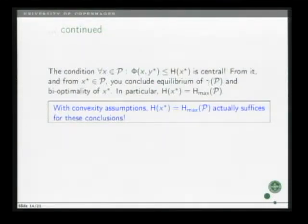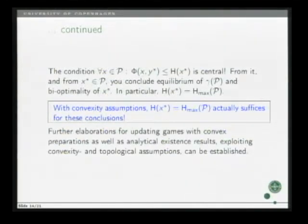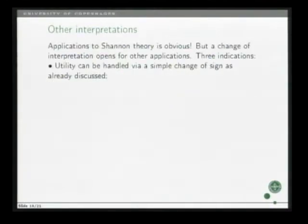Now, where does convexity make a change? Well, a difference, I should say. Well, the Nash equilibrium condition, we have seen is very central. If it holds, then in particular, then you have all these nice things. In particular, you have that the entropy of x star is the maximum entropy. But under convexity, this condition suffices for all these conclusions about equilibrium and bio-optimality. And there are more results, especially you can use the topological assumptions. I will not go into that.